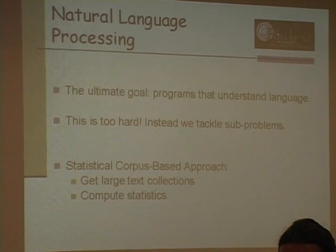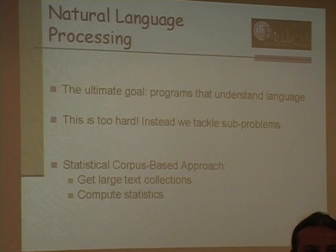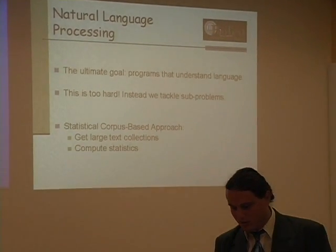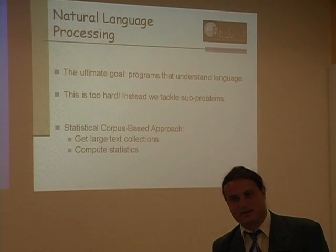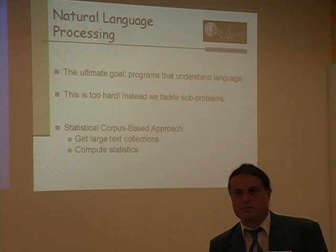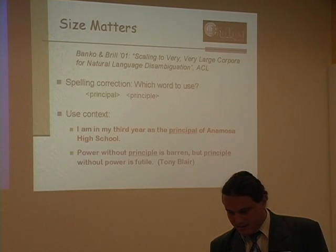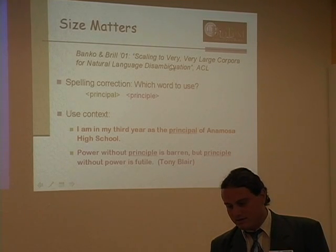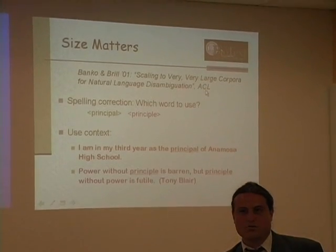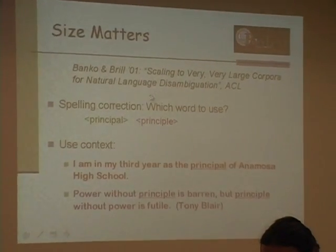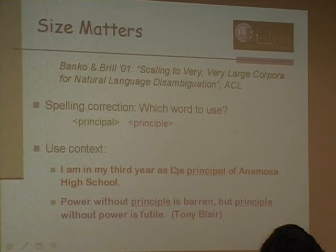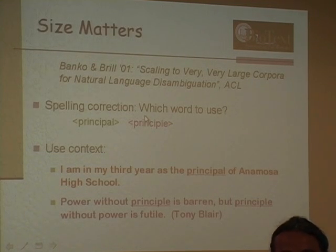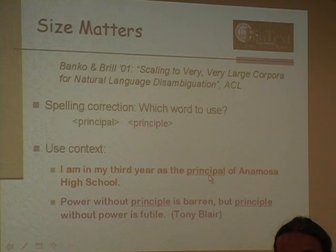In natural language processing, the ultimate goal is to have programs that can understand language. This is hard, so we focus on particular sub-problems. The dominant approach recently has been a statistical corpus-based one, where you get a very large collection and compute statistics over it. There was an influential 2001 paper by Banko and Brill on scaling to very large corpora, addressing spelling correction in context — for example, deciding whether to spell 'principal' a certain way. With sufficient training data, a classifier looking at surrounding context can determine which option is more likely.